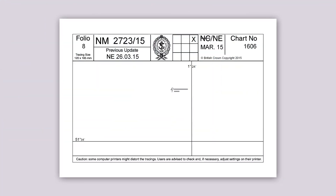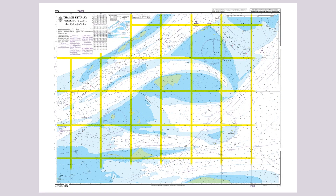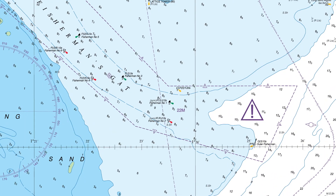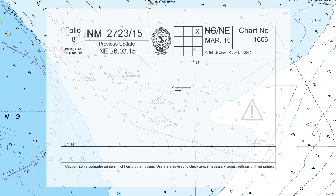This example will demonstrate how to delete a buoy and a description. Start by using the grid box to reference the NM position on the chart. Then, using the latitude and longitude guides on the tracing and the chart, lay the tracing to its exact location.